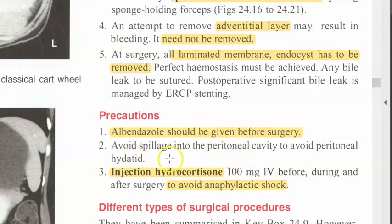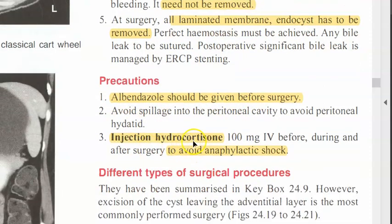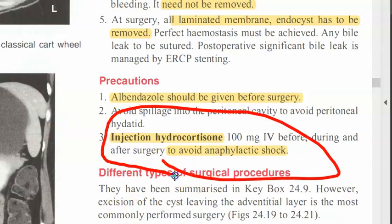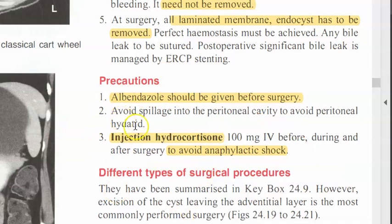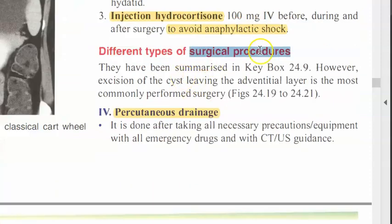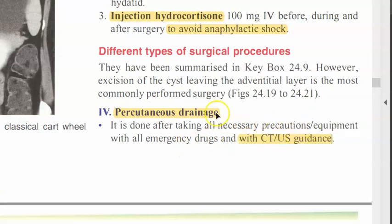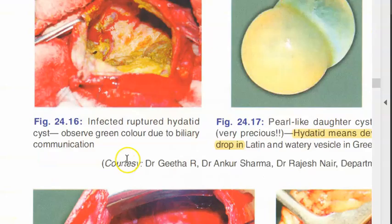Before surgery you should have given albendazole and hydrocortisone because if the cyst ruptures or hydatid fluid leaks, there can be an anaphylactic reaction. So give steroids before surgery. The other surgical procedure is percutaneous drainage — you go via the skin using CT or ultrasound guidance, without a full laparotomy, but always with all emergency drugs and equipment as precautions.